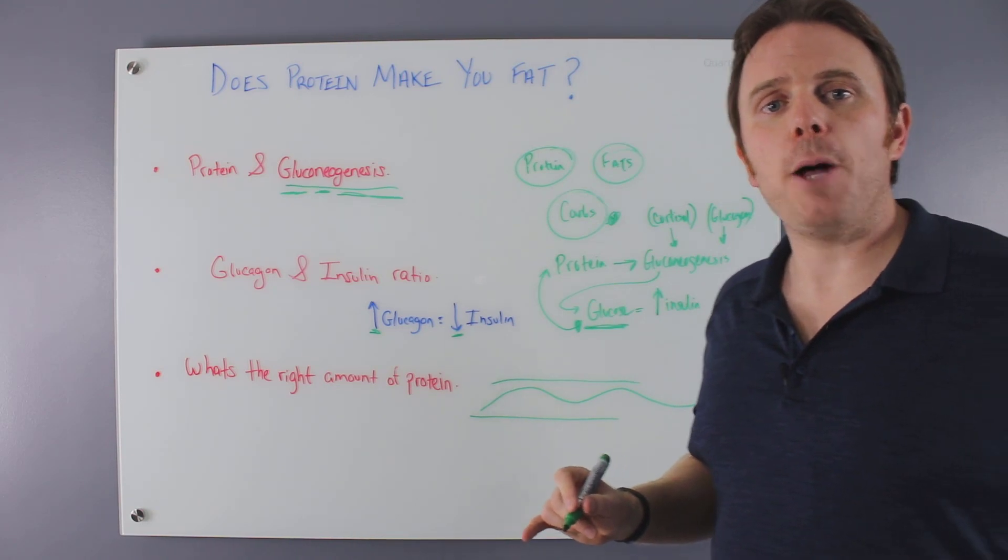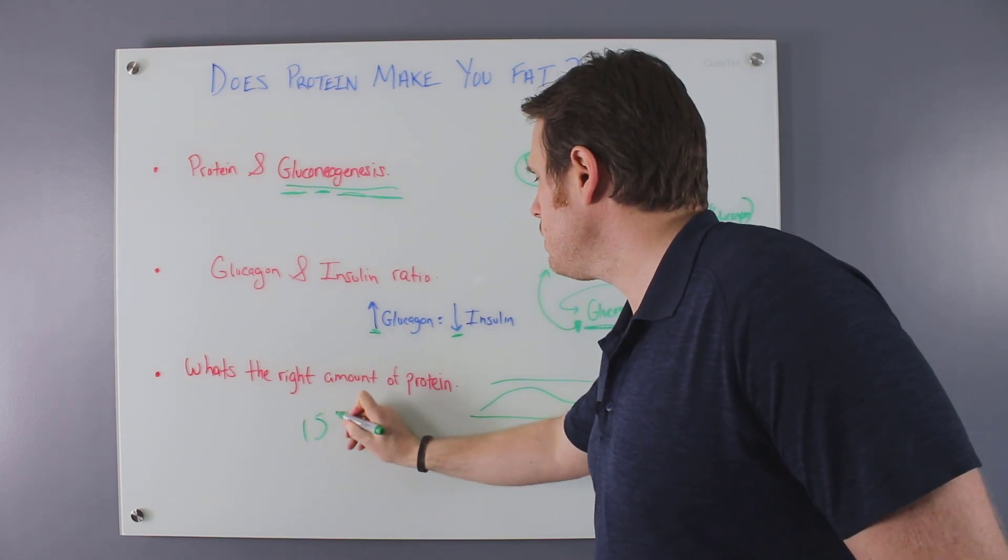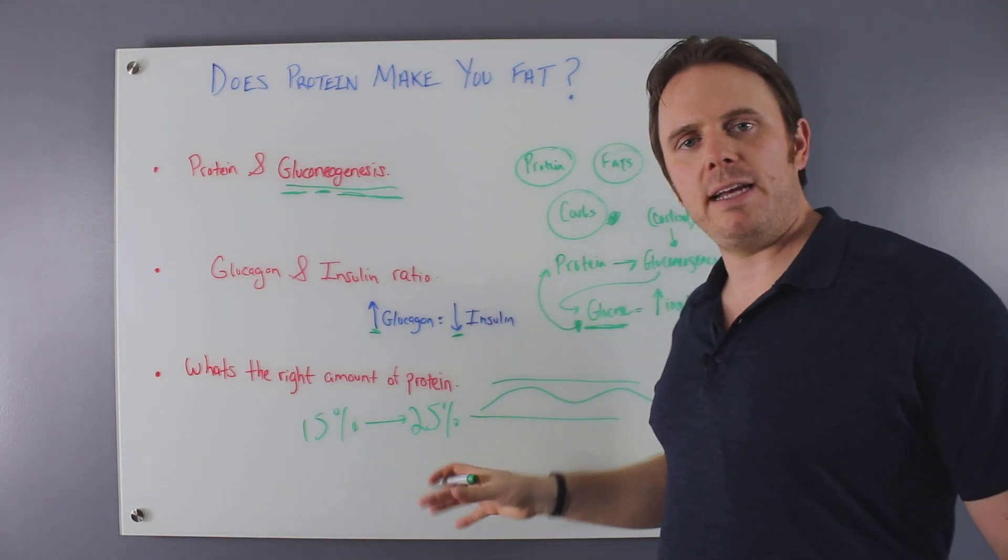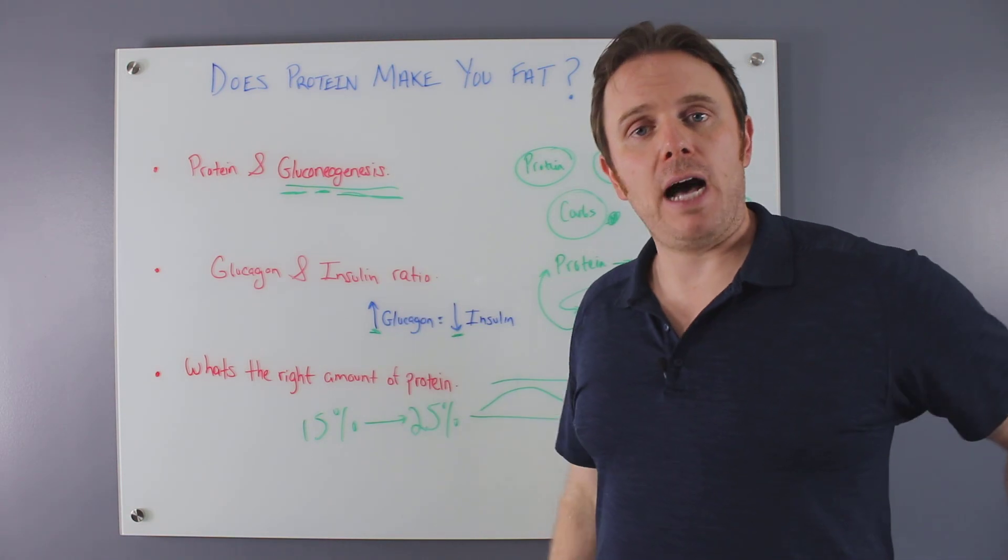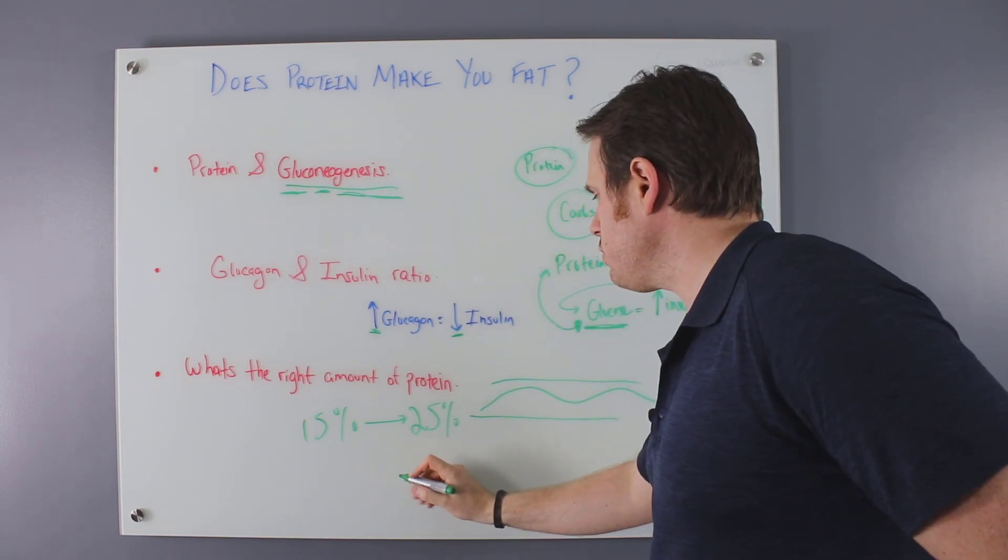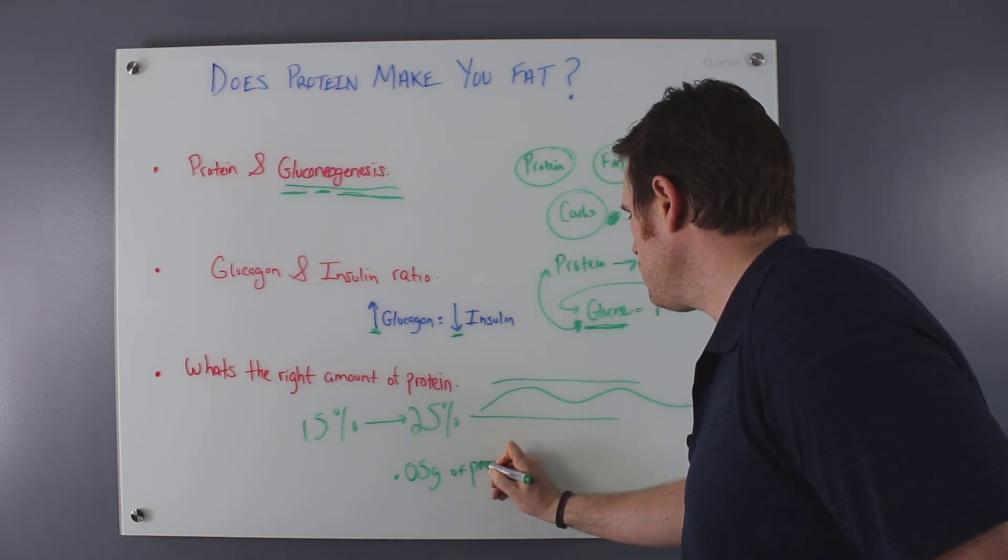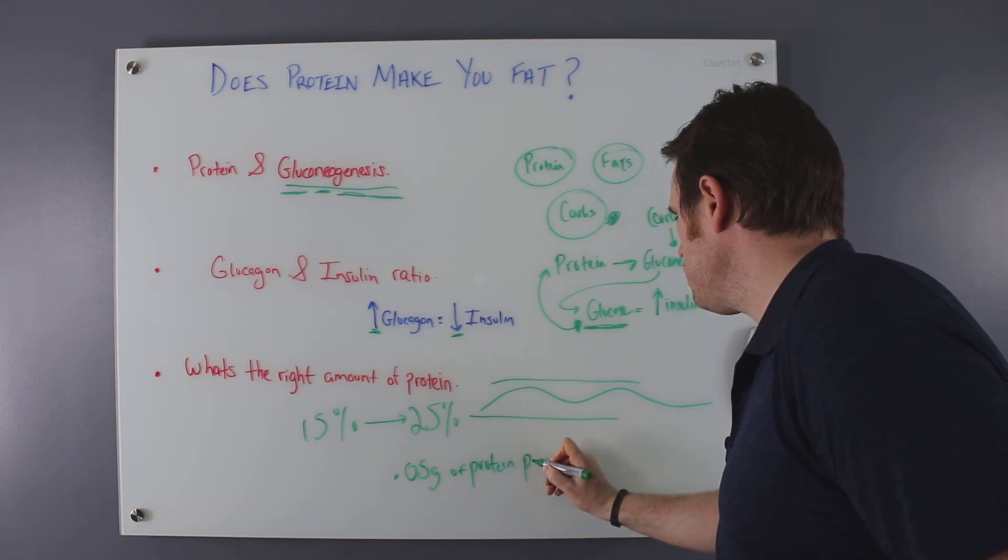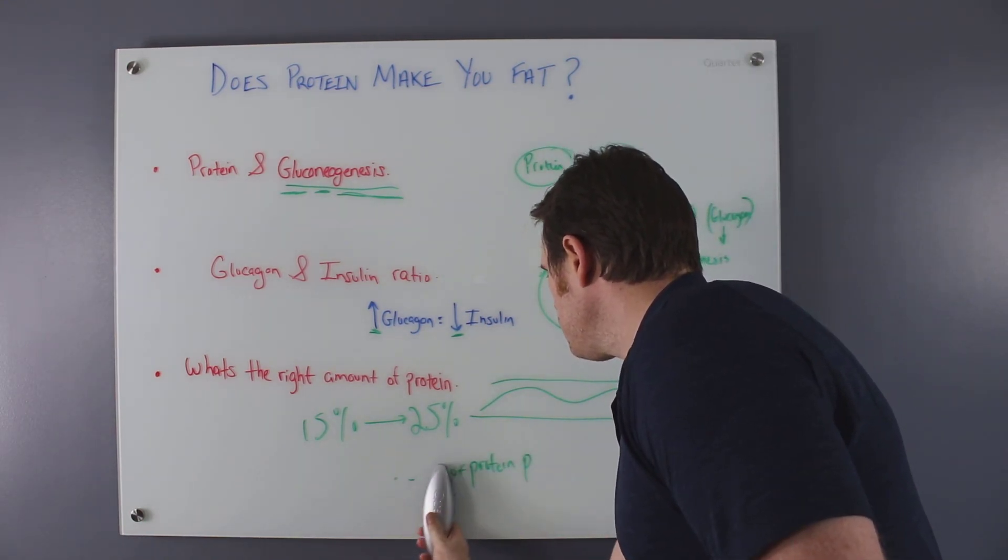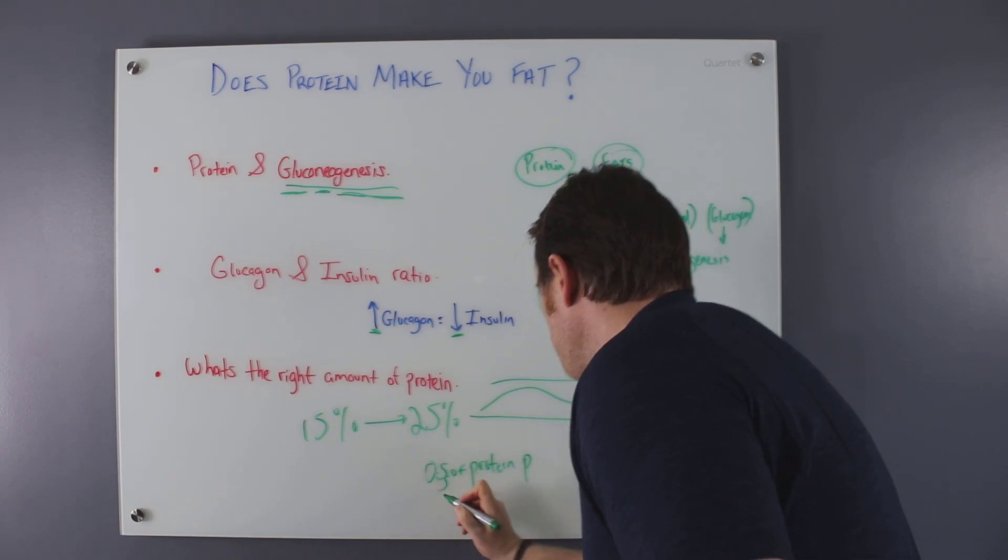So what's the right amount of protein? I typically tell patients anywhere between a palm to a fist to a full hand. So it can be between 15 to 25% is pretty good. Now again, you're going to have extremes. You're going to have people that are doing lots of exercise that may need to go up a little bit higher. And their overall calories as a whole may be higher. So it just really depends where they're at. So typically a palm to a fist to a full hand. So usually that would be anywhere between 0.5 grams of protein per pound.